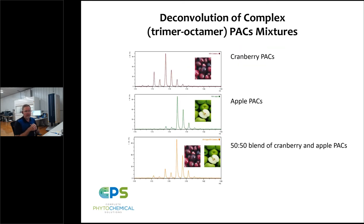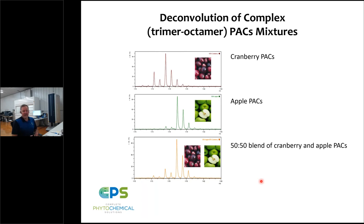Returning to the PowerPoint for further explanation: similar to what we did with the A-type and B-type dimers in binary mixtures, we can take a more complex oligomeric distribution of cranberry proanthocyanidins and compare that to the distribution of apple proanthocyanidins. Each has a unique spectral fingerprint. If these are blended at a known ratio — in this case 50/50 — the expected outcome is a summation of these two complex overlapping isotope distributions. Applying matrix algebra and deconvolution, we can estimate the relative contribution of A-type and B-type linkages at each degree of polymerization.